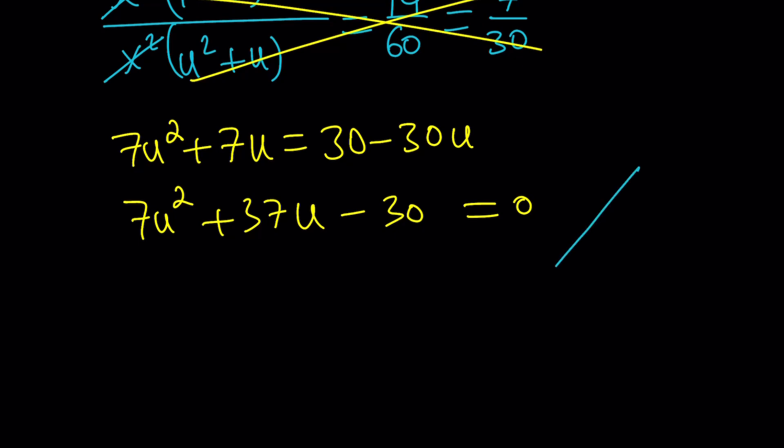I'm going to draw a big x and then write the product of 7 and negative 30, which is my product here, negative 210. And the sum, which is the coefficient of 37. So my goal is to find two numbers whose product is negative 210 and whose sum is 37. The top number is my product and the other one is the sum. And those numbers are negative 5 and 42. By trying different factors of negative 210, you can find these numbers easily.